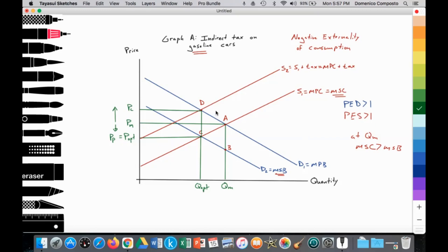So I'll go ahead and analyze this as we would for a paper exam. As can be seen, we have graph A illustrating an indirect tax or a Pigovian tax on gasoline cars to discourage the consumption of those cars. We're measuring the price of those cars on the y-axis and the quantity supply demanded of those cars on the x-axis.